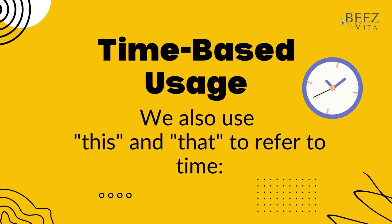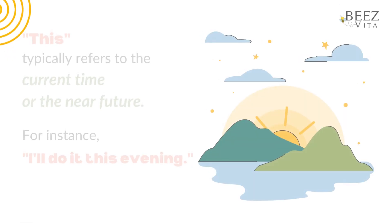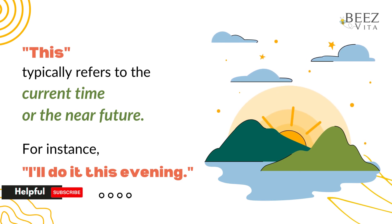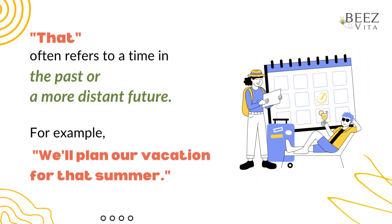We also use this and that to refer to time. This typically refers to the current time or the near future. For instance, 'I'll do it this evening.' That often refers to a time in the past or a more distant future. For example, 'We'll plan our vacation for that summer.'